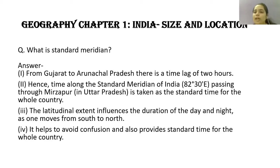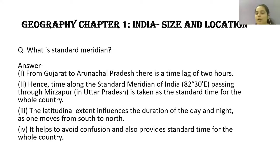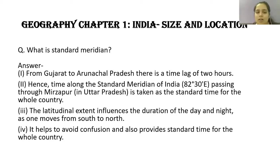If we live in one country and there is a time lag, that creates confusion. Today, because of Standard Meridian, both Gujarat and Arunachal Pradesh follow the same time. Standard Meridian is an imaginary line passing through Mirzapur, Uttar Pradesh. Our country created it so that there is one standard time across India. This time is taken as the standard time for the whole country.